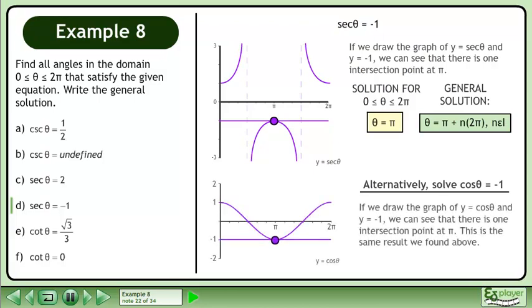Alternatively, if we draw the graph of y equals cos θ and y equals negative 1, we can see that there is one intersection point at π. This is the same result we found above.